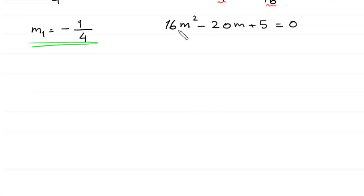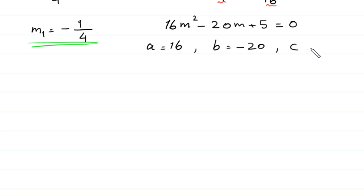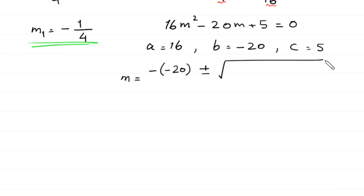Now this quadratic equation can be solved by the quadratic formula. In this equation, a equals 16, b equals negative 20, and c equals 5. According to the quadratic formula, m equals negative b plus or minus square root of b squared minus 4ac, all divided by 2a.